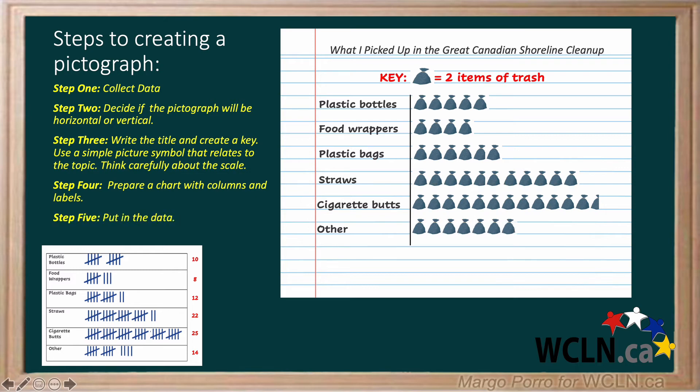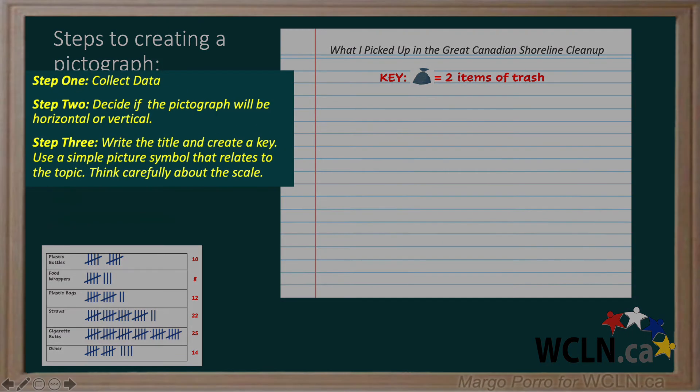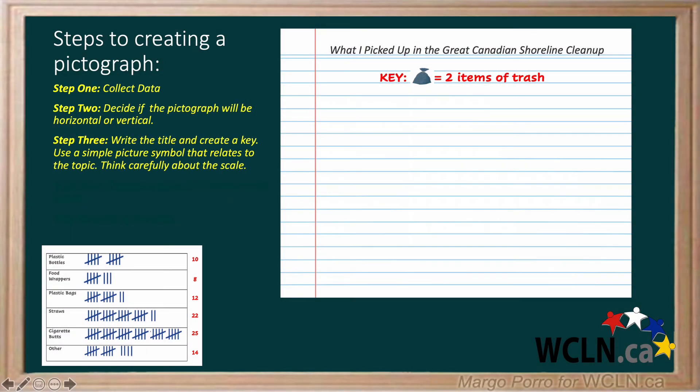Now all of the steps are done. If Holly had chosen a vertical pictograph, she would still show the same information, but she would need to know how much space to leave for her data. Steps 1, 2, and 3 are the same. Step 4 — prepare a chart with columns and labels — is a little bit different. For a vertical pictograph, one column is needed for each category, and we need to know how many lines the largest category will need.